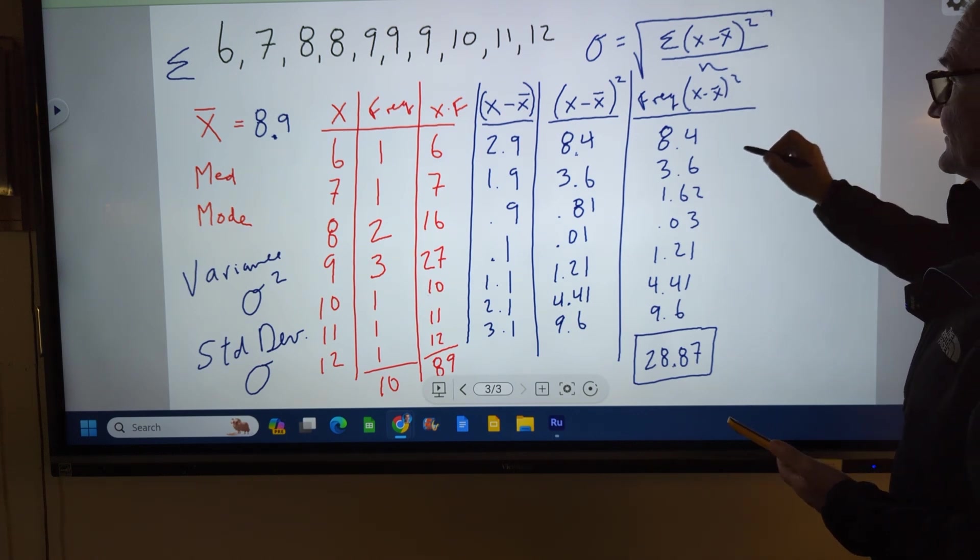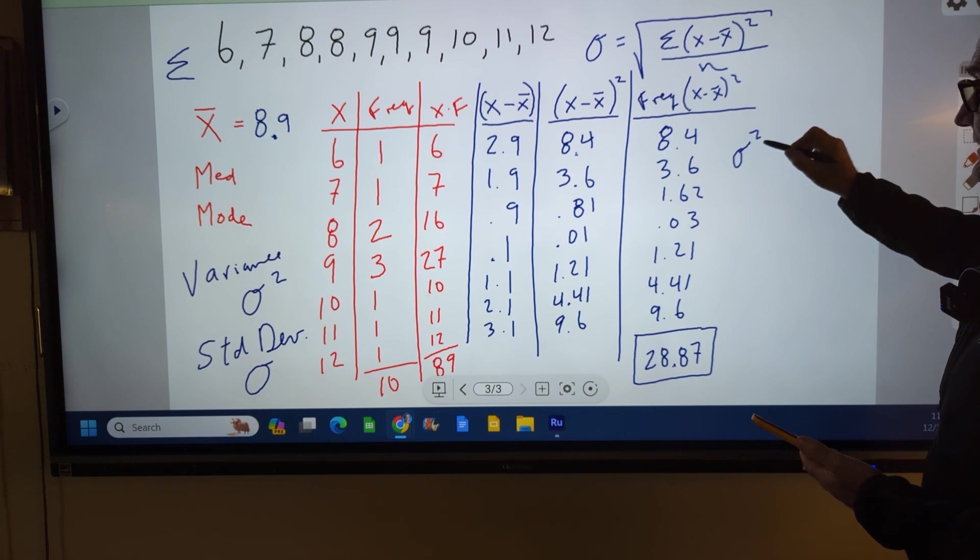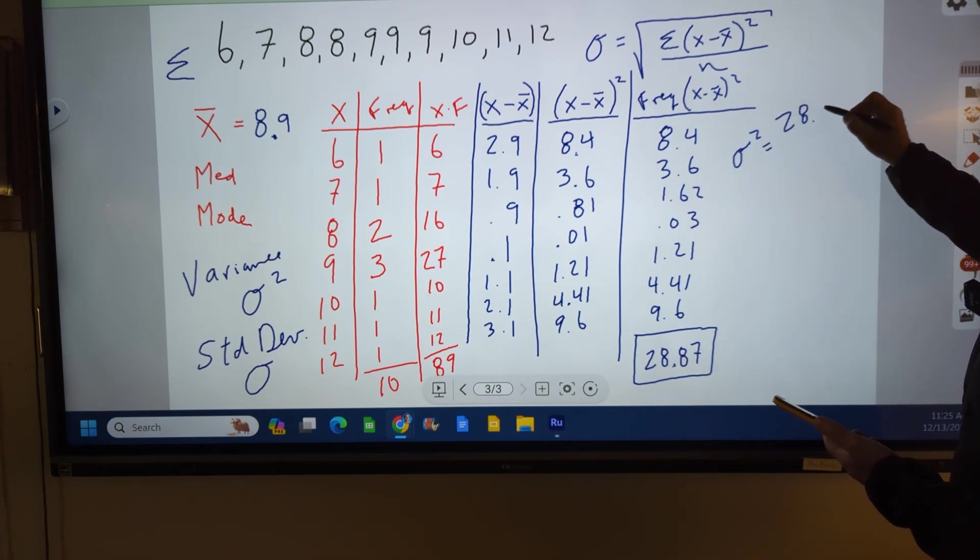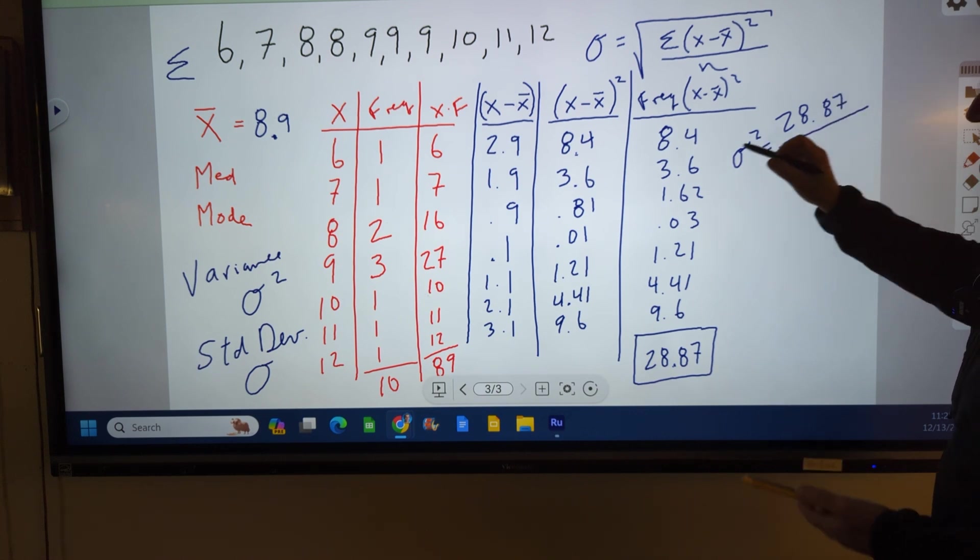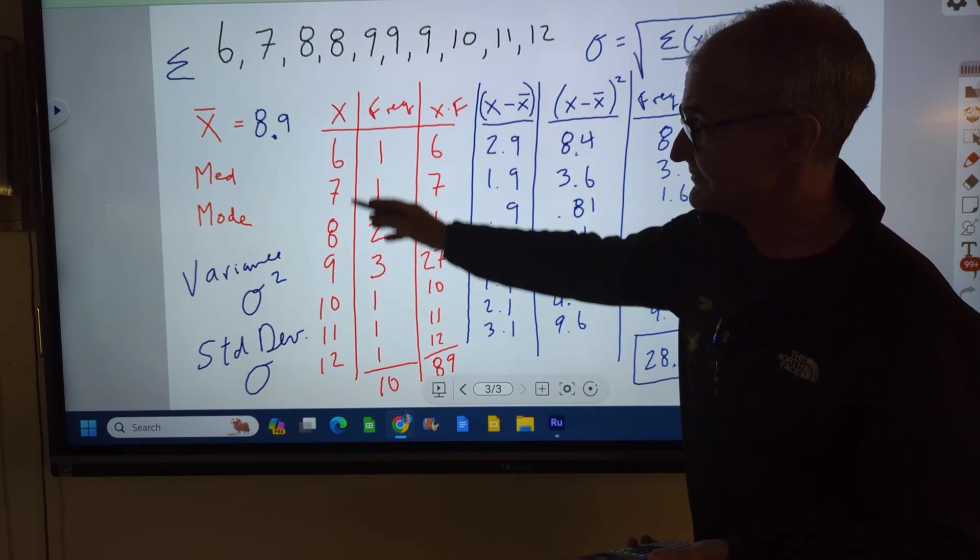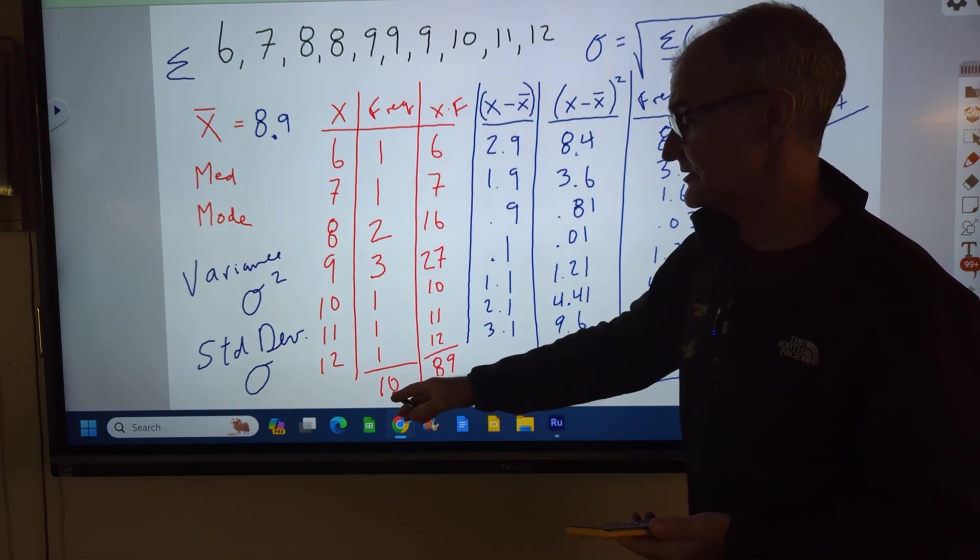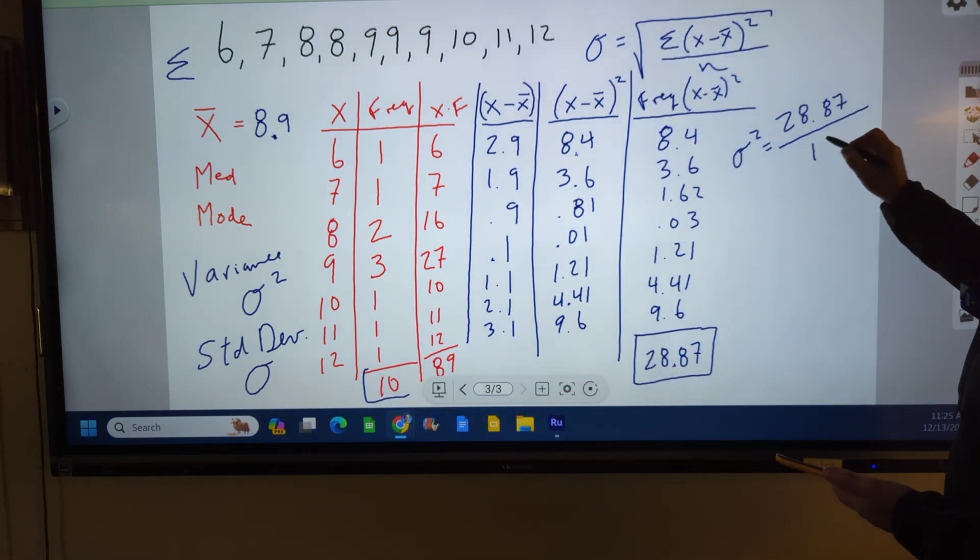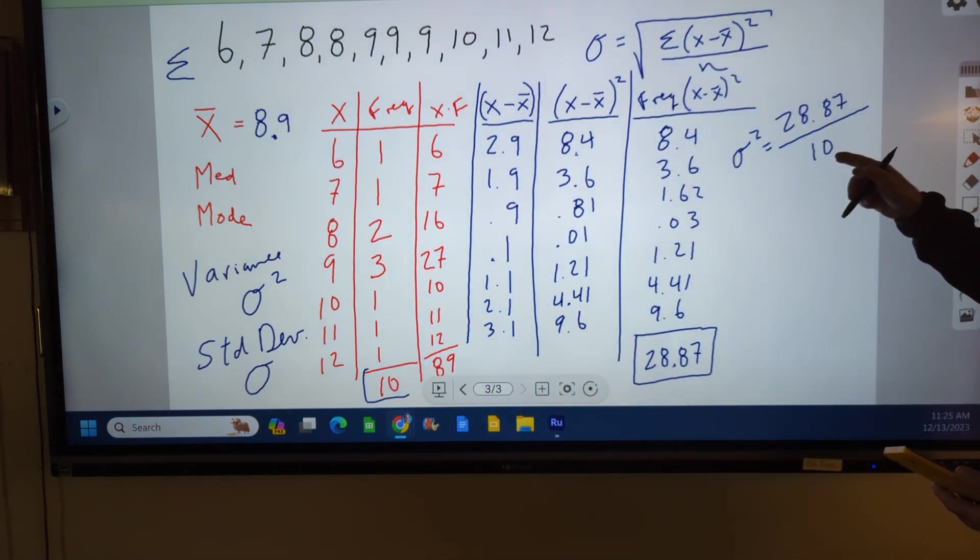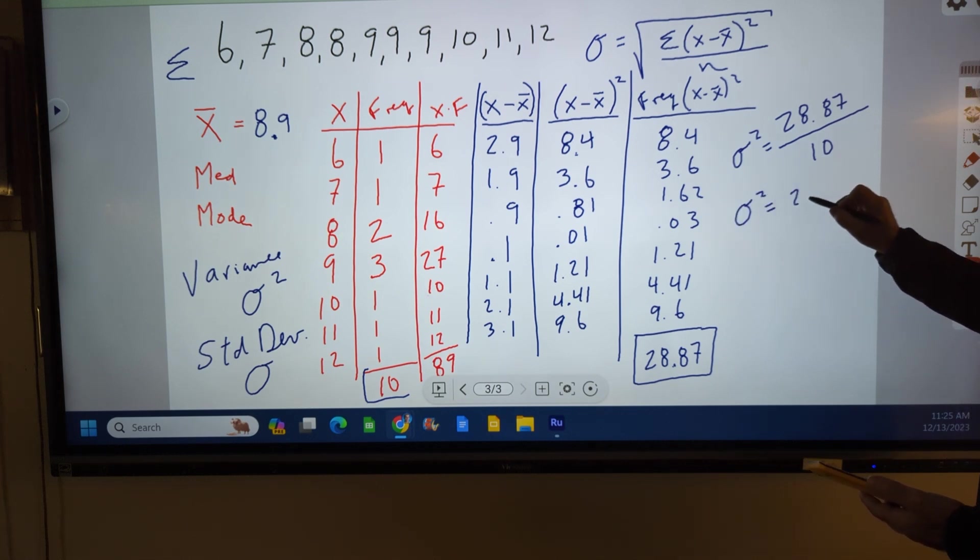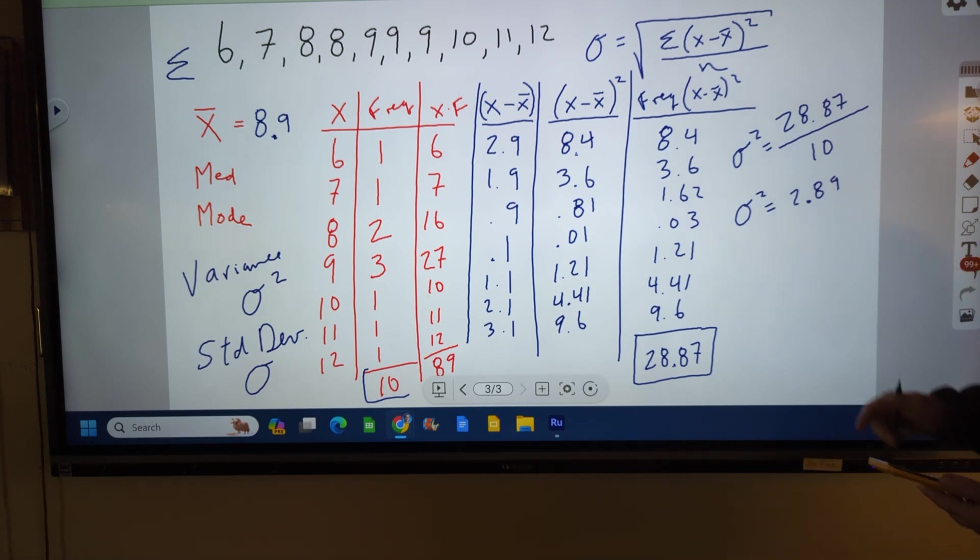To find my variance, σ², it's going to be the sum of my deviation squared, 28.87, divided by the number of values. I might only have seven values, but they occur 10 times, so n equals 10. So I take this number, I divide it by 10. My variance is equal to 2.89. So that's my variance.